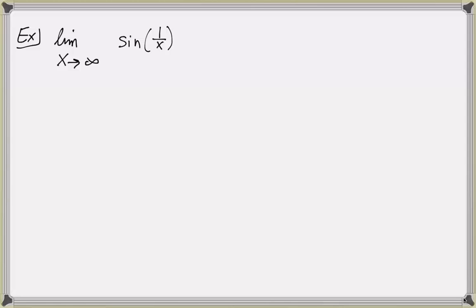Now let's consider the limit as x approaches infinity of sine of 1 over x. Recall that the sine function is a continuous function, and so by a theorem about limits, I can take the limit inside the continuous function. This equals the sine of the limit as x approaches infinity of 1 over x. Since the limit of 1 over x equals 0, this just equals the sine of 0, which equals 0.